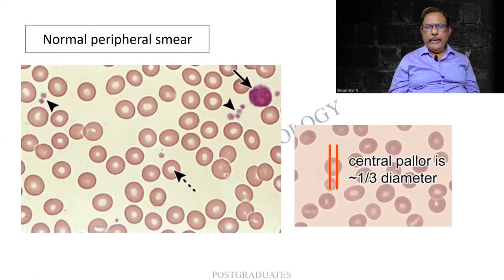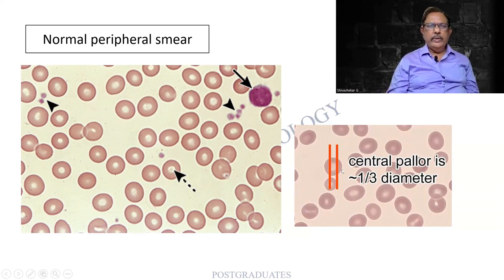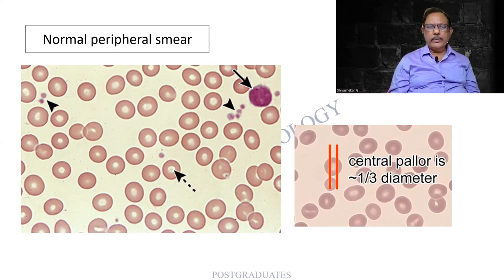Now we go to the peripheral smear. A normal peripheral smear we should know. On the screen I am finding a lymphocyte, erythrocytes, and a few platelets. What is important is the size of the cell and the central pallor — about one-third the diameter — comparable to the adjacent area of hemoglobinization, and more or less equal to the nucleus of the lymphocyte. This is a normal peripheral smear.